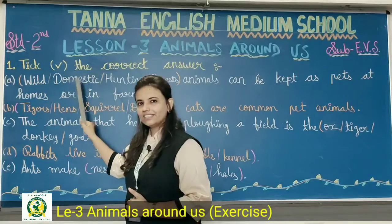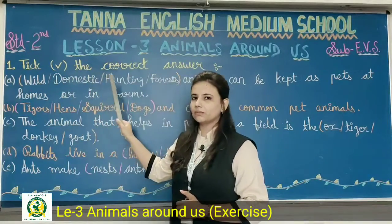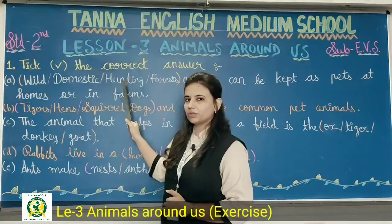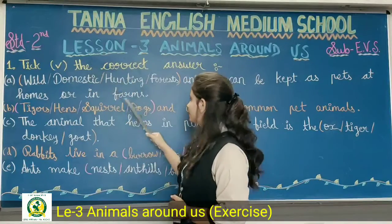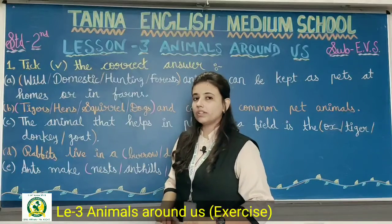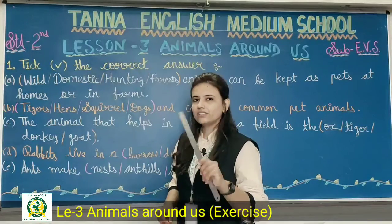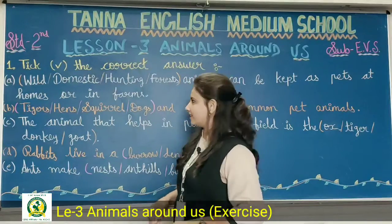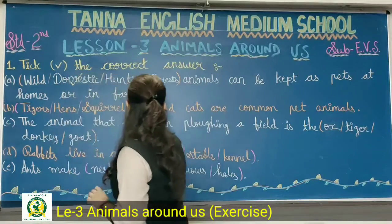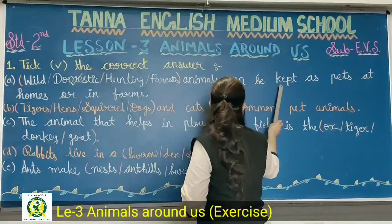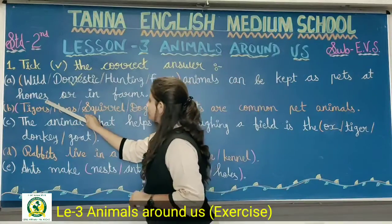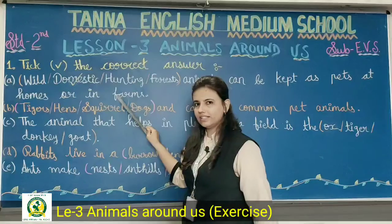Domestic? Yes! Domestic animals ko hum as a pet apne ghar pe rakh sakte hai na. Hunting — shikar karne wale animals — woh hum nahi rakh sakte hai. Or forest means joo forest mein rehte hai, jungle mein. So what is our correct answer? Domestic. So all of you tick the domestic option. Domestic animals can be kept as pets at homes or in farms. Done students?